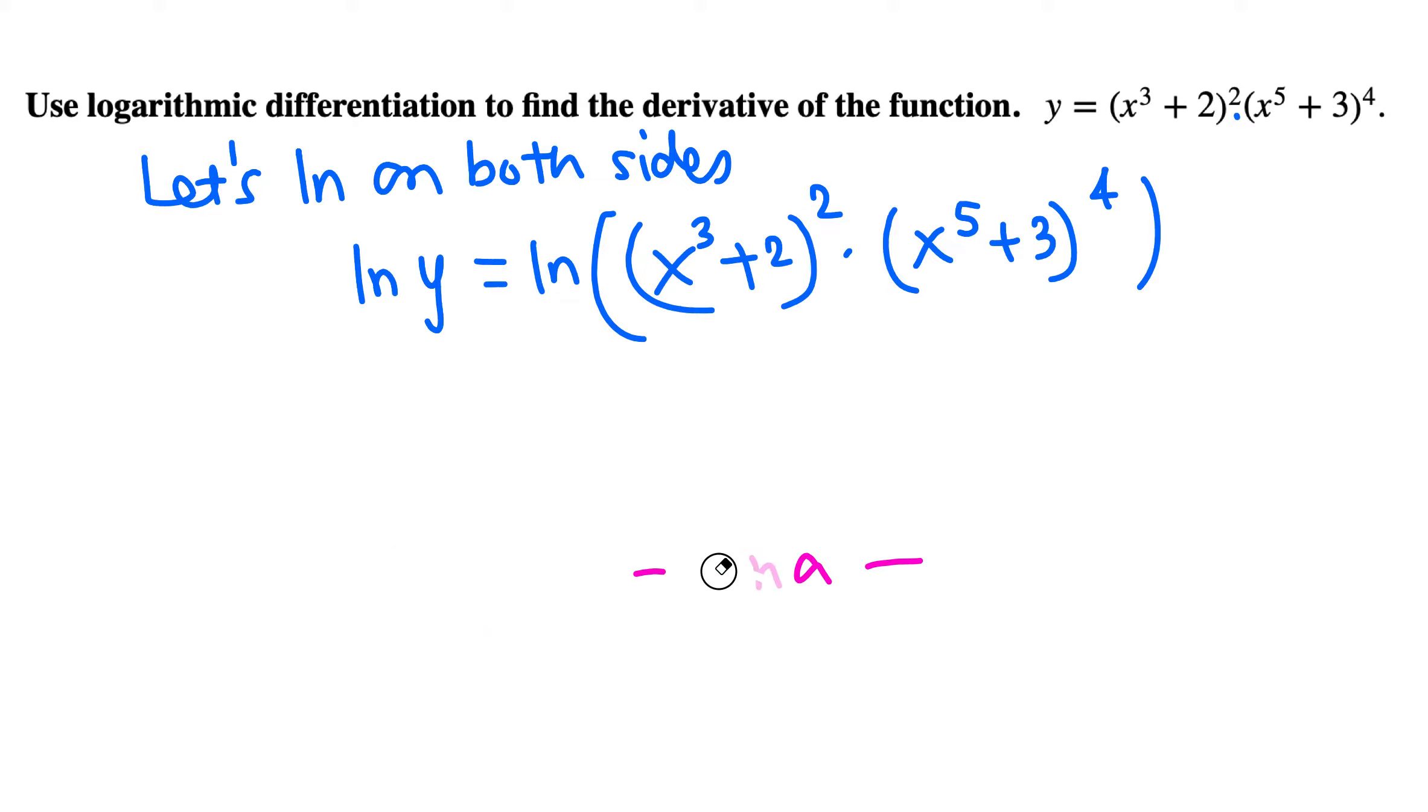So here we can separate this as natural log of the first factor plus natural log of the second factor. And now this exponent comes to the front—we can factor this exponent.